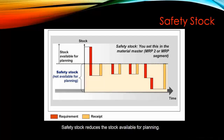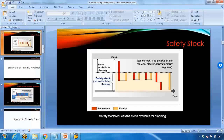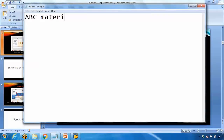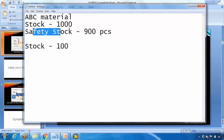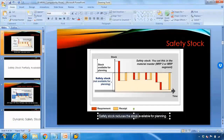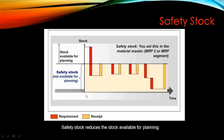The main point to note is that safety stock reduces the stock available for planning. For example, if material ABC has 1000 pieces in stock and you set a safety stock of 900 pieces, only 100 pieces will be available for planning — because the safety stock consumes the warehouse stock. In other words, safety stock will eat into the stock we have in the warehouse.